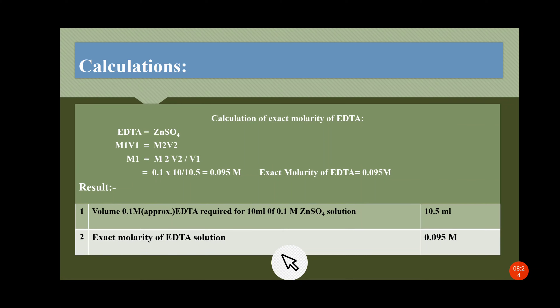Relate EDTA with zinc sulfate using the relation M1V1 = M2V2. To find M1 (molarity of EDTA): M1 = M2V2 / V1, where V1 is the constant burette reading (10.5 ml), M2 is 0.1 molar, and V2 is 10 ml. Therefore M1 = (0.1 × 10) / 10.5 = 0.095 molar. The result: the volume of 0.1 molar approximate EDTA required for 10 ml of 0.1 molar zinc sulfate solution is 10.5 ml, and the exact molarity of EDTA solution is 0.095 molar.